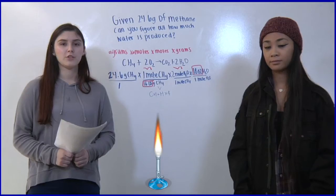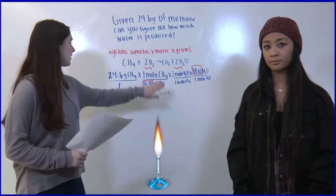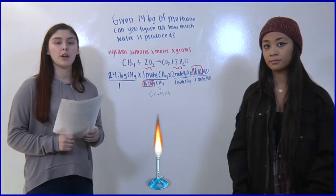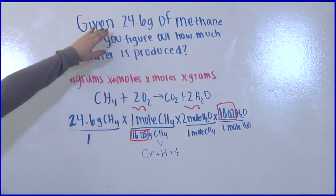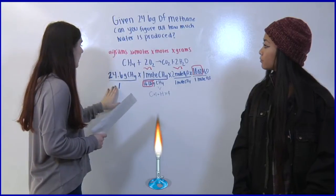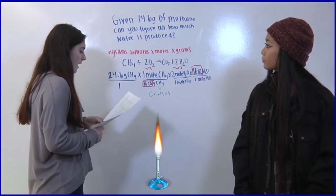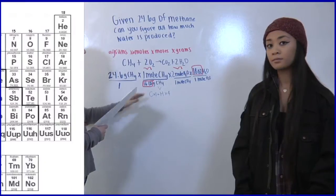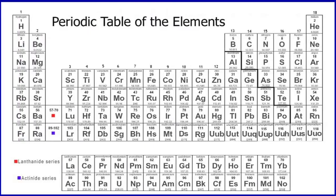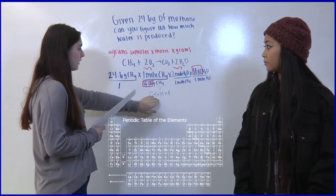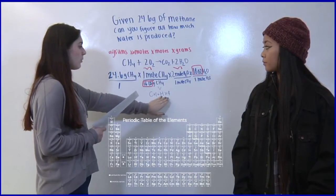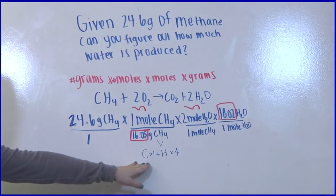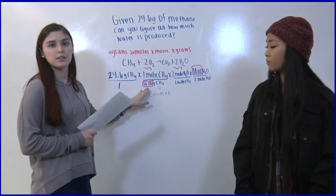The first step is to make sure the equation is balanced. Next write down what we know and write it over 1. So right here we're given 24.6 and we're going to write it over 1. Then we're going to find the atomic mass of methane on the periodic table, which carbon is around 12 and hydrogen is around 1. We're going to times hydrogen by 4 and times carbon by 1. Add them up and that equals 16.05.